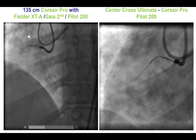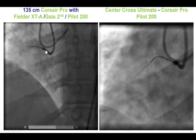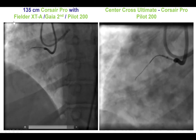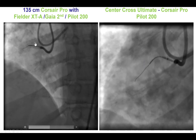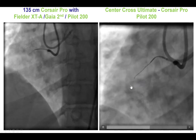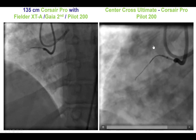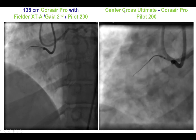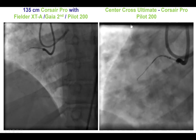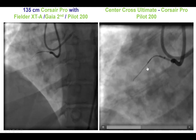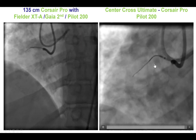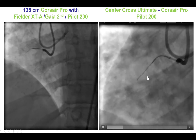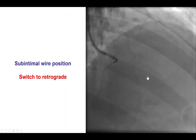We tried antegrade wire escalation using the Corsair Pro microcatheter with several guide wires. As per standard escalation, we tried the Fielder XTA, followed by a Guide second and a Pilot 100. Unfortunately, the wires appeared to be in the subintimal space. We tried a Centering Cross microcatheter, which centers and provides extra support, and also used an AmpLatz guide. Nevertheless, we had a very hard time penetrating, and eventually found that the guide wire was in a subintimal position, as confirmed by retrograde injection.